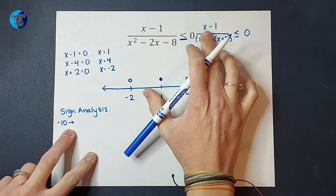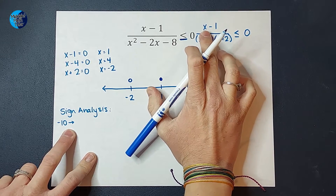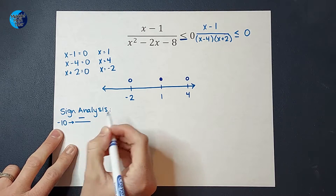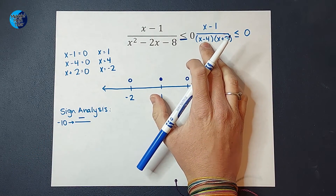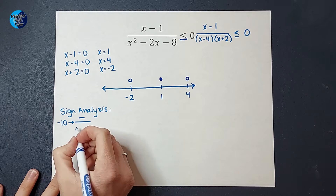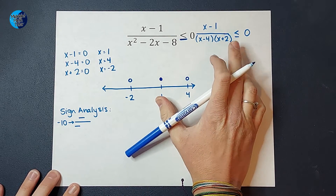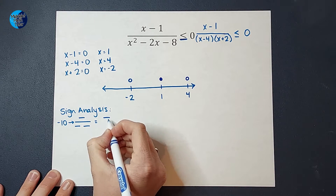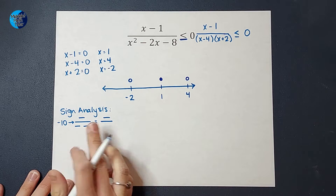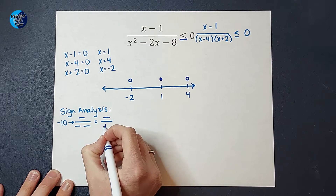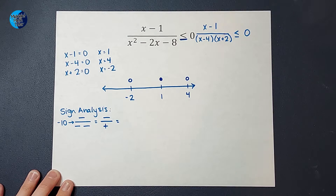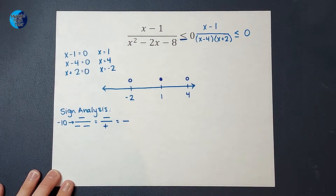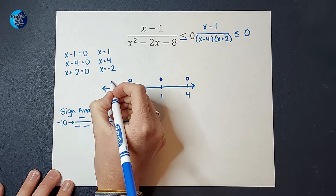When I plug in negative 10: on top, negative 10 minus 1 gives a negative number. On the bottom, negative 10 minus 4 gives a negative number, and negative 10 plus 2 also gives a negative number. So on top I have a negative. On the bottom, a negative times a negative is positive. And when I divide a negative by a positive, I get a negative. So this region to the left of negative 2 is negative.